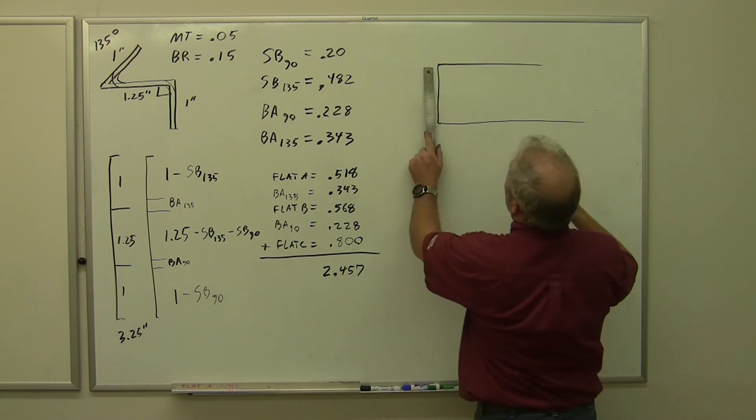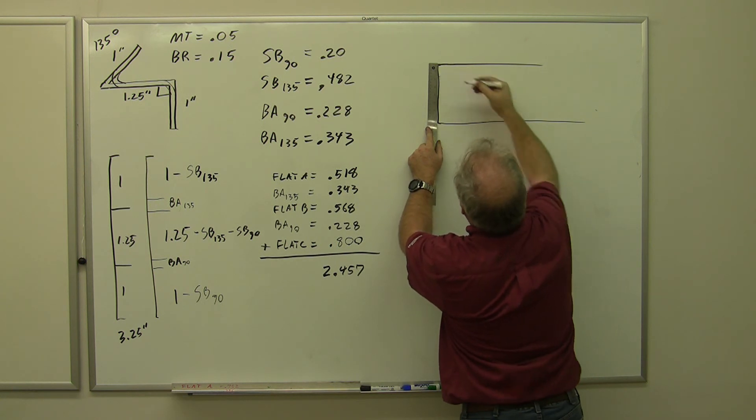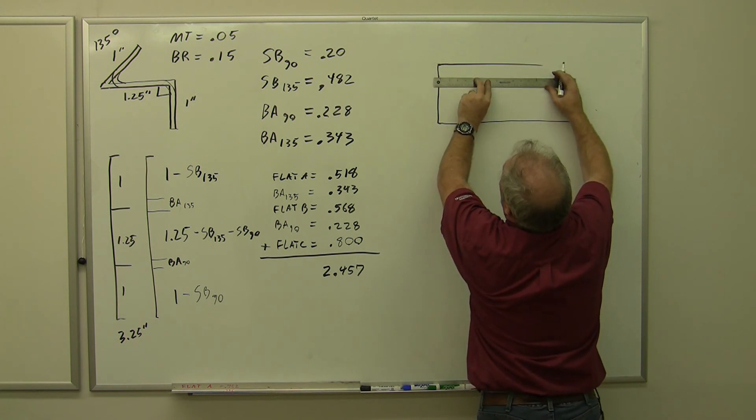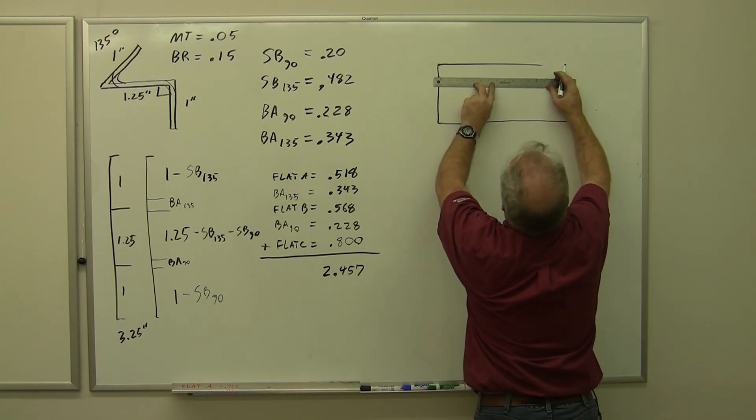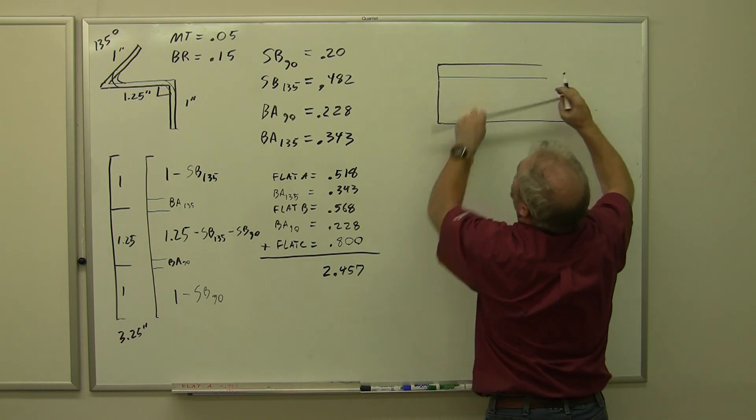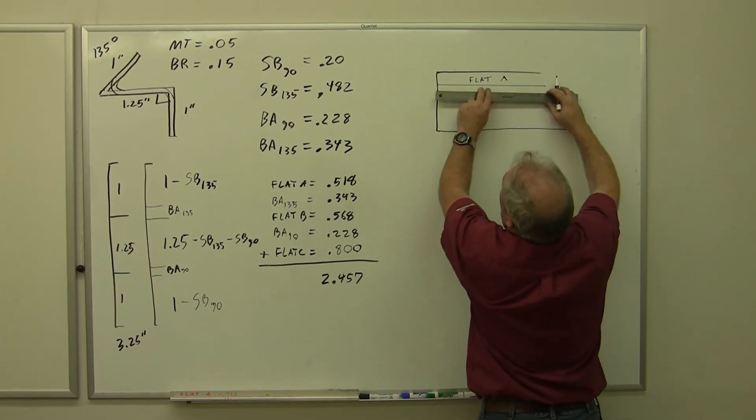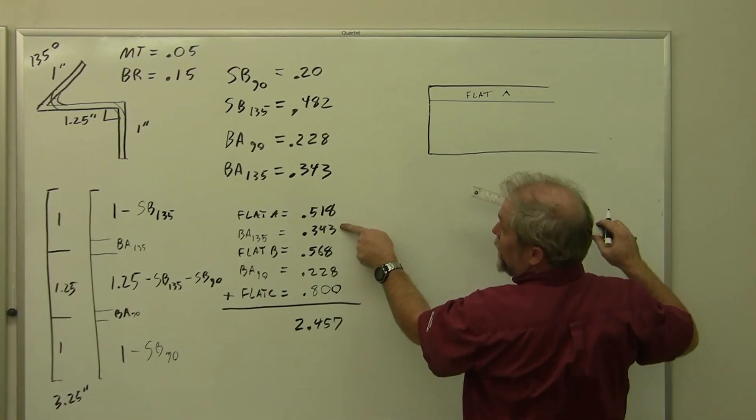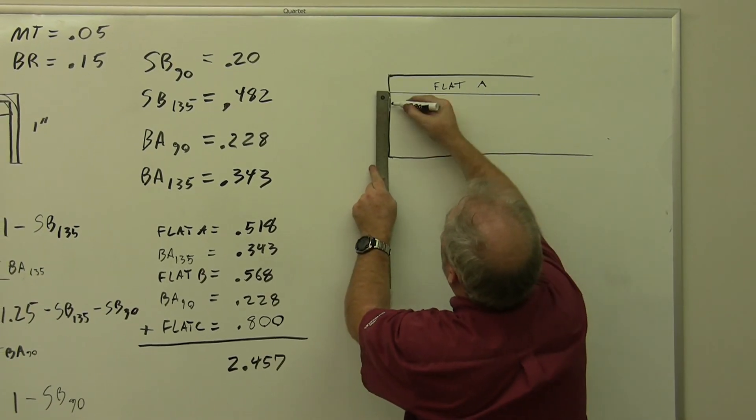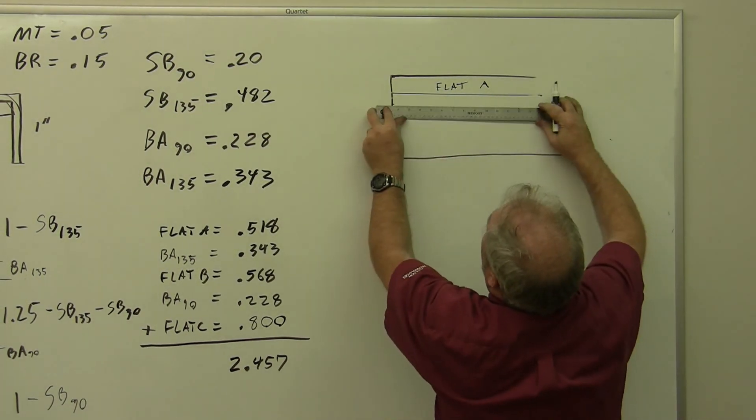Our first one, 0.518, is going to come out right about here. This is our first bend tangent line. This is flat A, and this is bend allowance 135, which is 0.343 times 3, just over 1, comes out right about there.